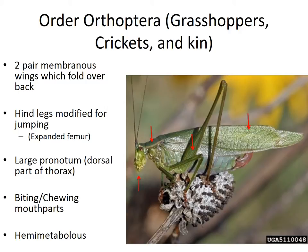First, most members of this order have two pairs of membranous wings that fold over their back. In some groups, these wings are reduced or secondarily lost. Most members of this group have modified hind legs, and most of those are modified for jumping, usually involving a kind of expanded femur with more musculature for jumping. Members of this order have an enlarged pronotum — the dorsal part of the thorax. And they all have biting or chewing mouthparts, and they're hemimetabolous.